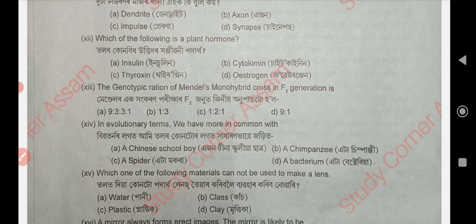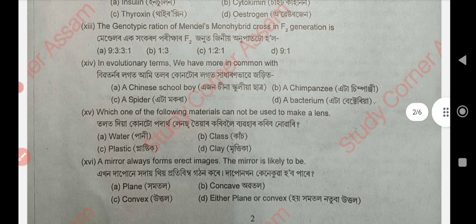Next question: which one of the following materials cannot be used to make a lens? That is, which material cannot be used to make a lens? The answer is option D — Clay.